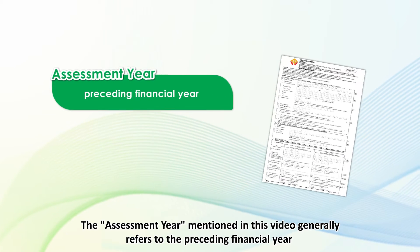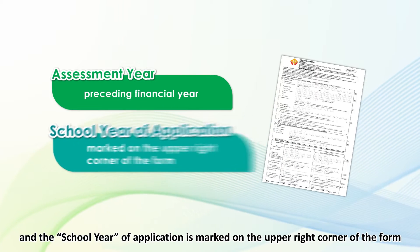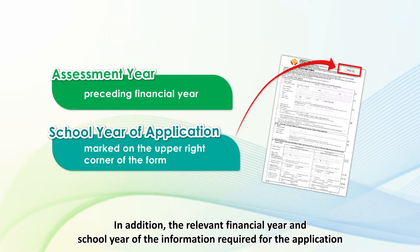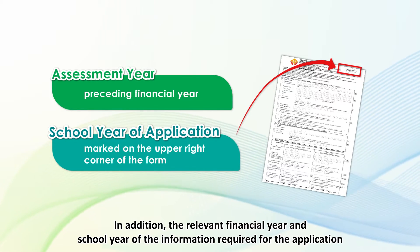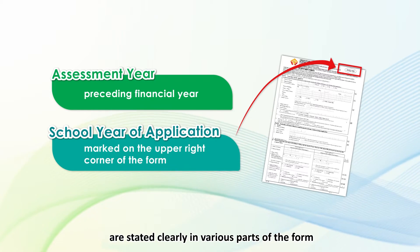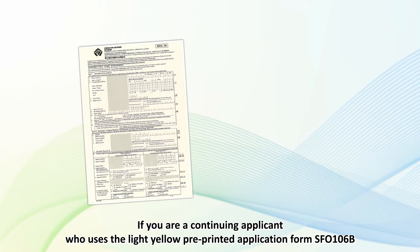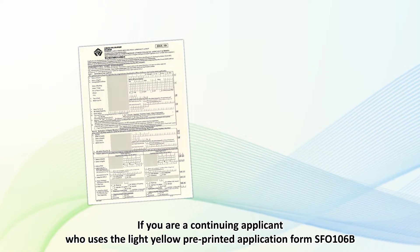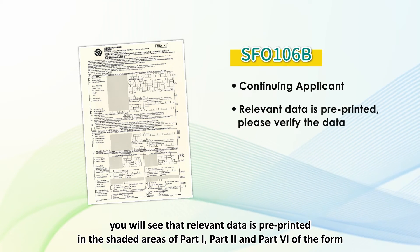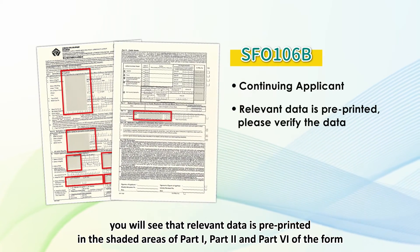The assessment year mentioned in this video generally refers to the preceding financial year, and the school year of application is marked on the upper right corner of the form. The relevant financial year and school year of the information required for the application are stated clearly in various parts of the form. If you are a continuing applicant who uses the light yellow pre-printed application form SFO-106B, you will see that relevant data is pre-printed in the shaded areas of Part 1, Part 2, and Part 6 of the form.